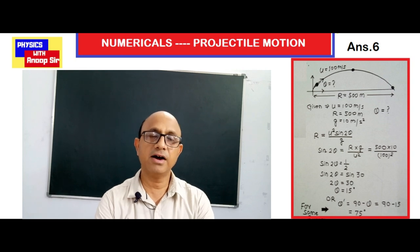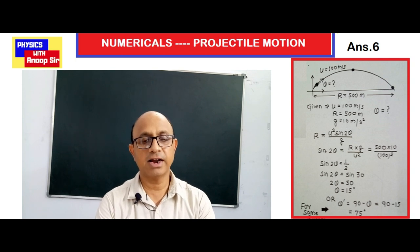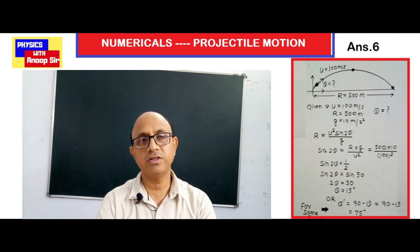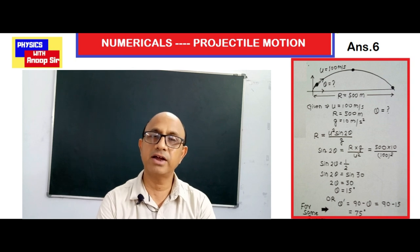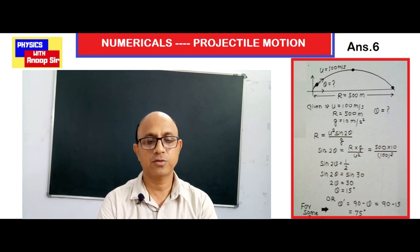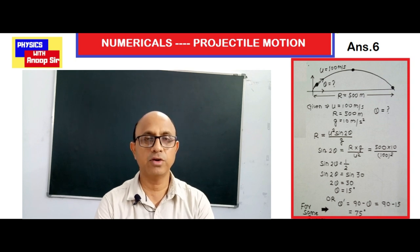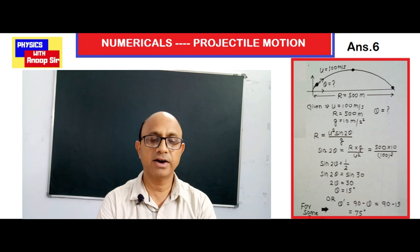We will use the range formula: R = u² sin2θ / g. From this we solve for sin2θ: R × g / u² = 500 × 10 / 100² = 0.5, so sin2θ = 1/2. Writing sin30° in place of 1/2, we get 2θ = 30°, therefore θ = 15 degrees.